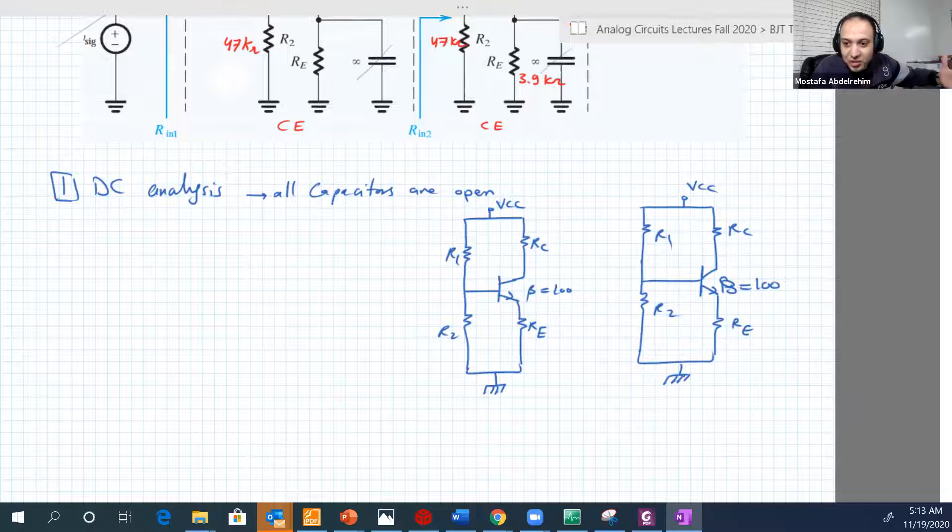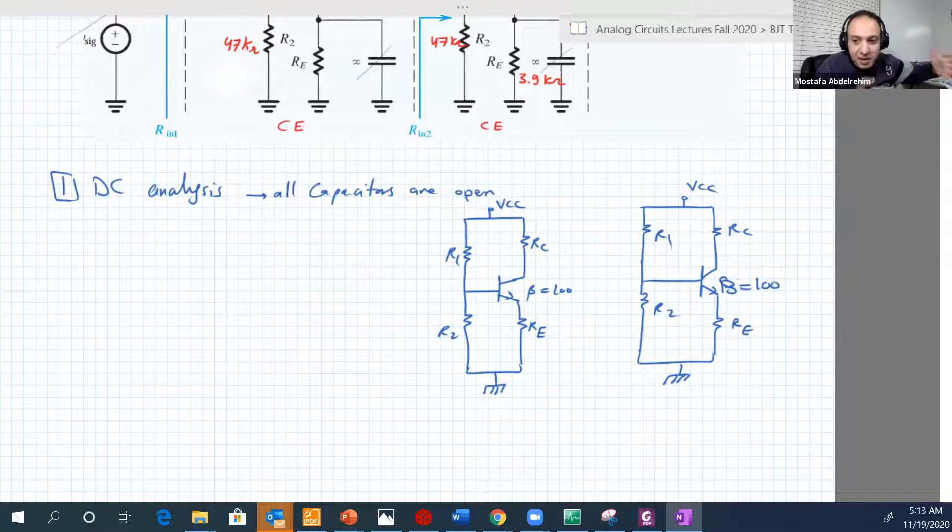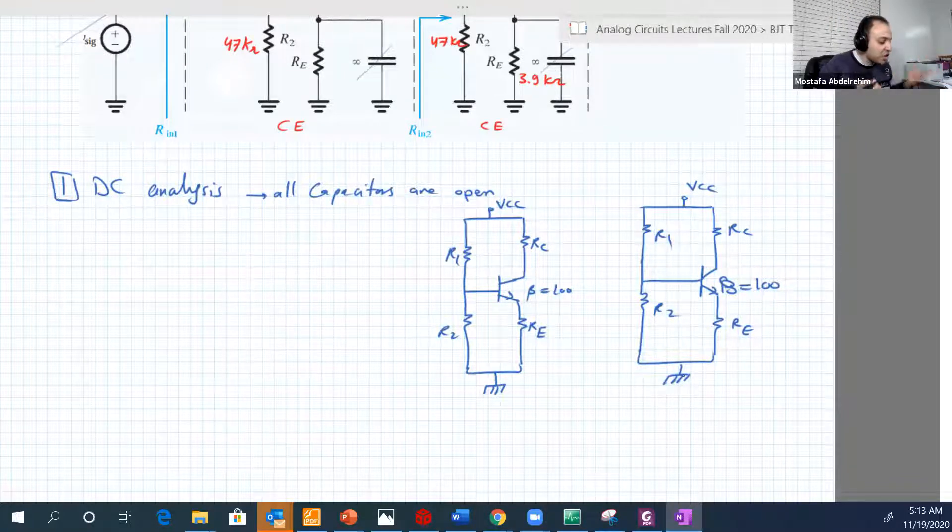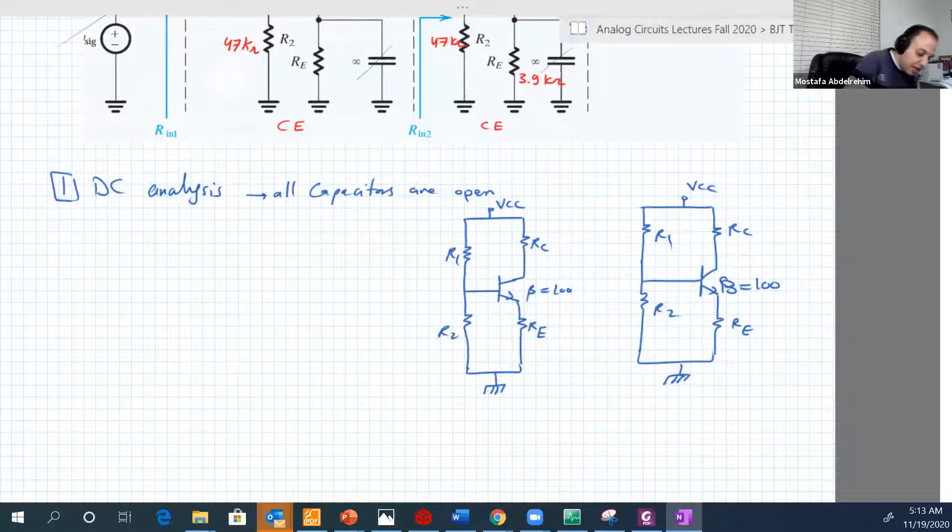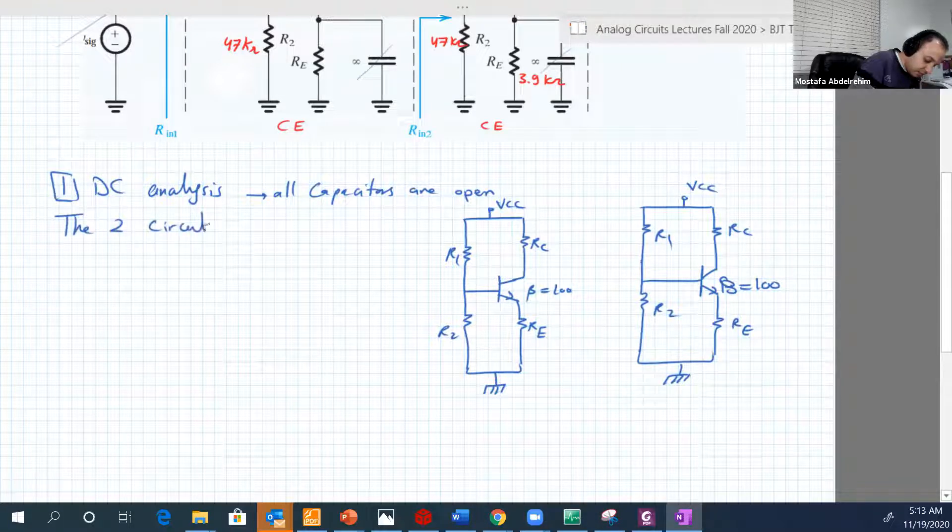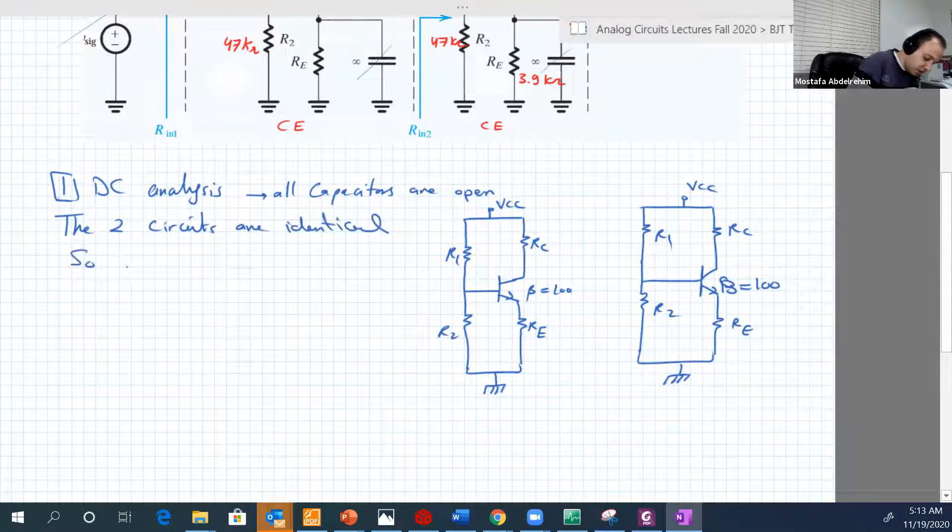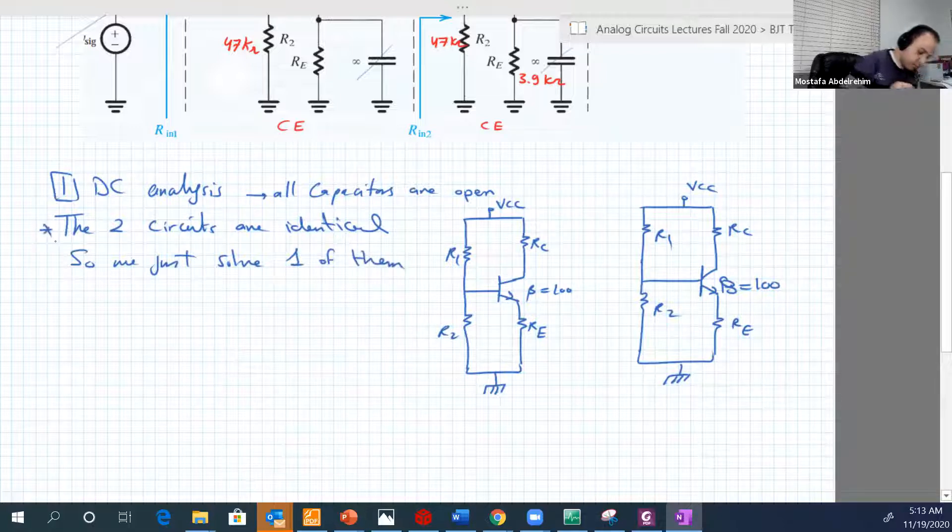So just solve one of them and the numbers that you get from anyone will be of course applicable to the second one. So if you get IB, IB1 is equal to IB2. IB in transistor 1 is equal to IB of transistor 2, or circuit 2. IC here is also IC here. VBE is also VBE and so on. So we just solve one of them. The two circuits are identical, so we just solve one of them.